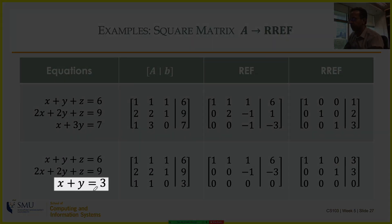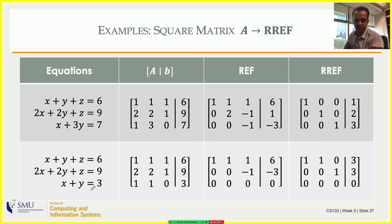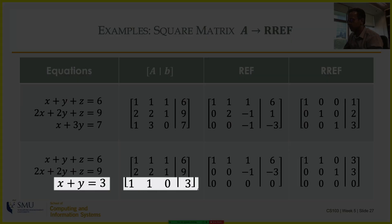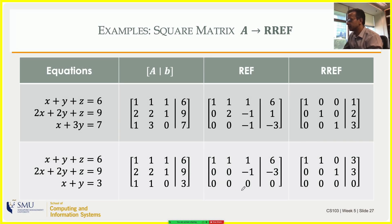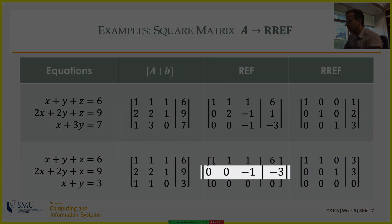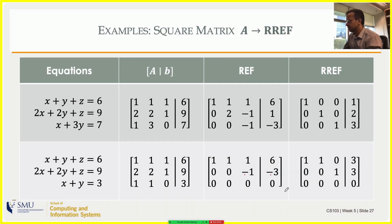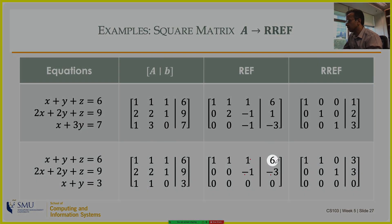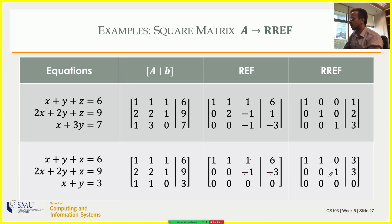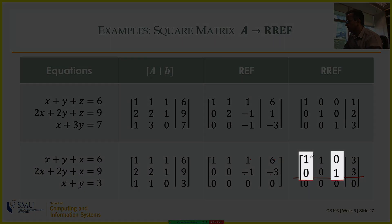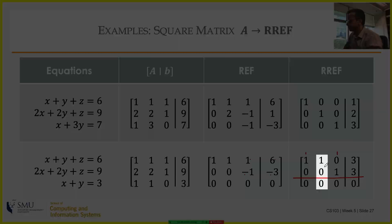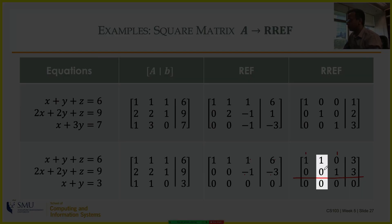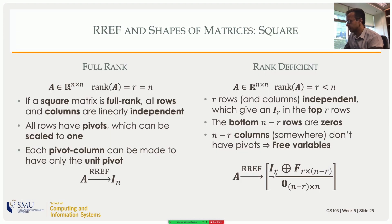If the third equation is x + y = 3, which is linearly dependent on the previous two, the augmented matrix has a zero row after REF. Running RREF: scale the second row by -1 to get a leading one, use it to zero out the element above. The RREF has the identity matrix in two pivot columns, but in between there is a column corresponding to a free variable — that is the Ir structure with free variable columns mixed in.